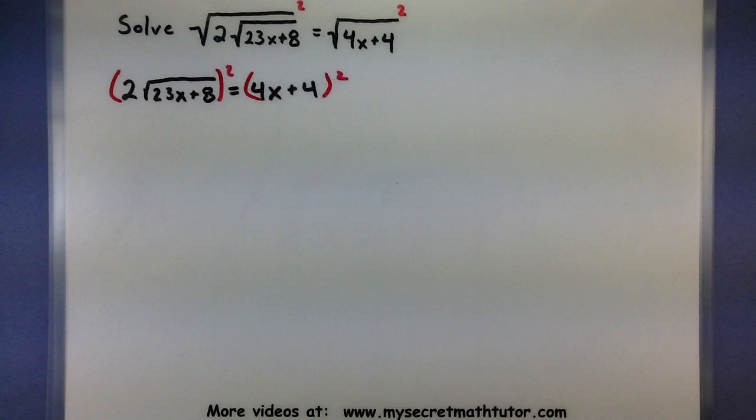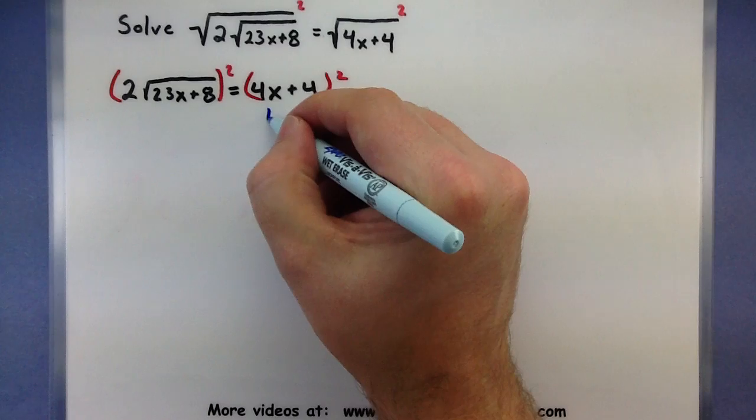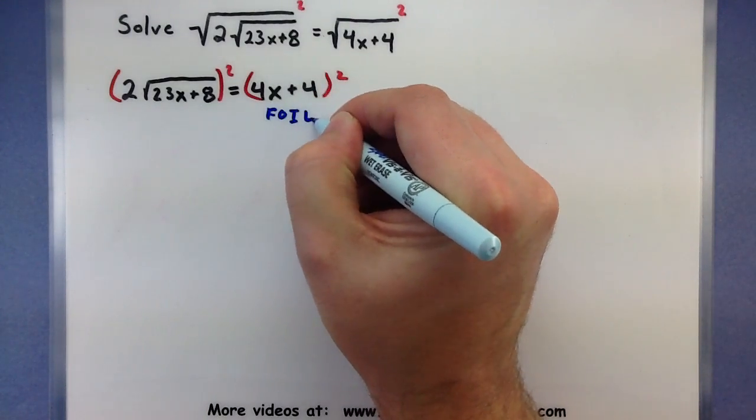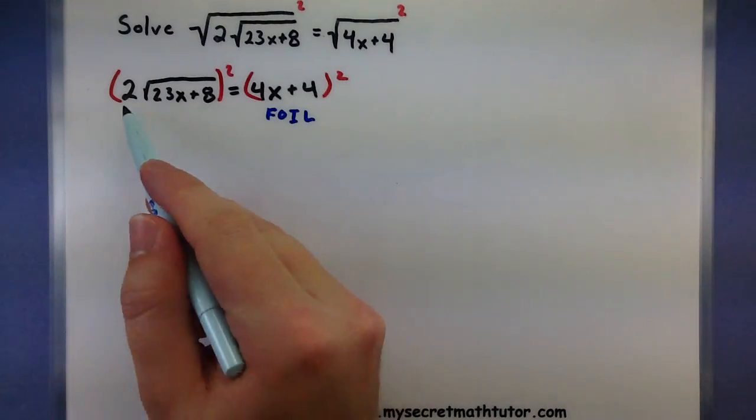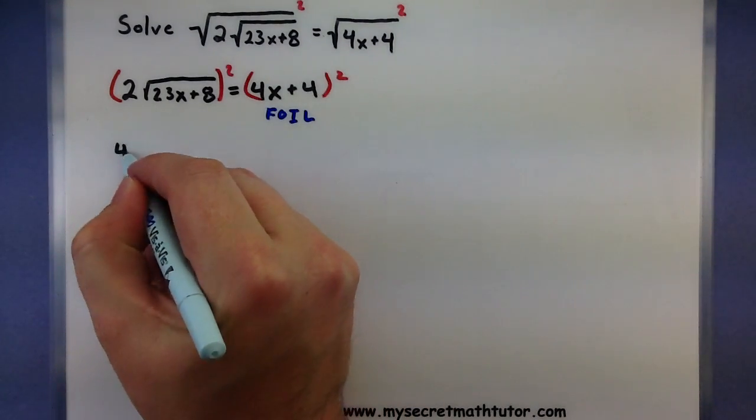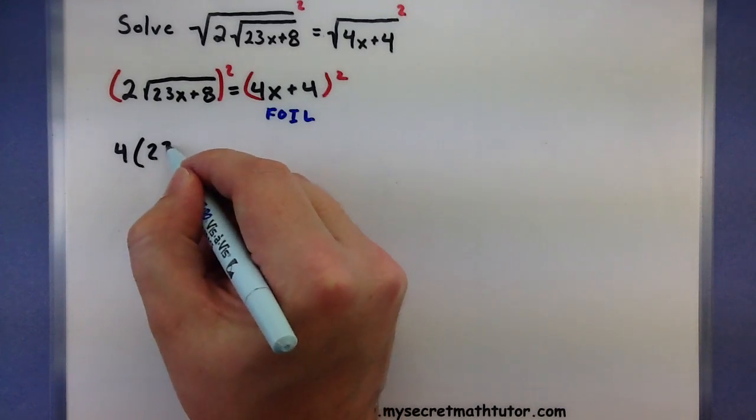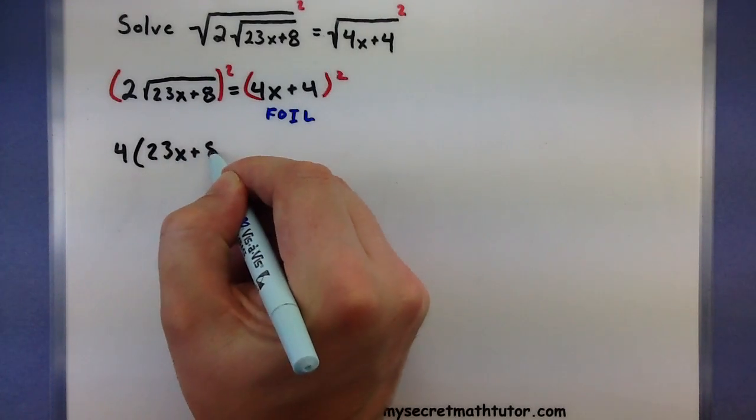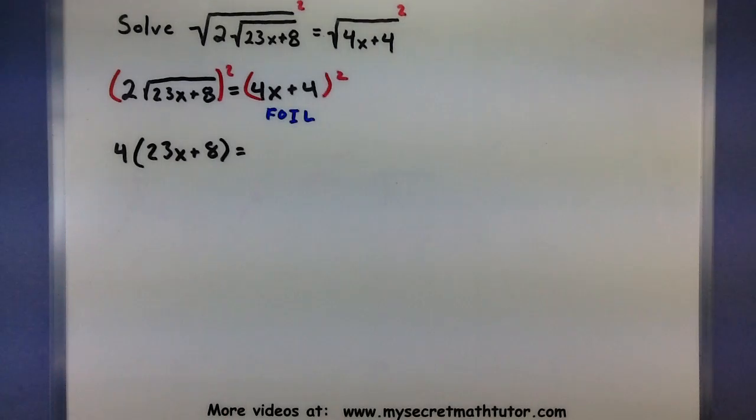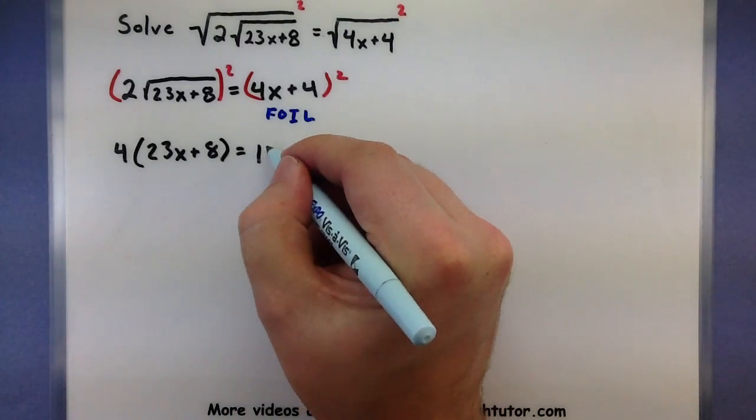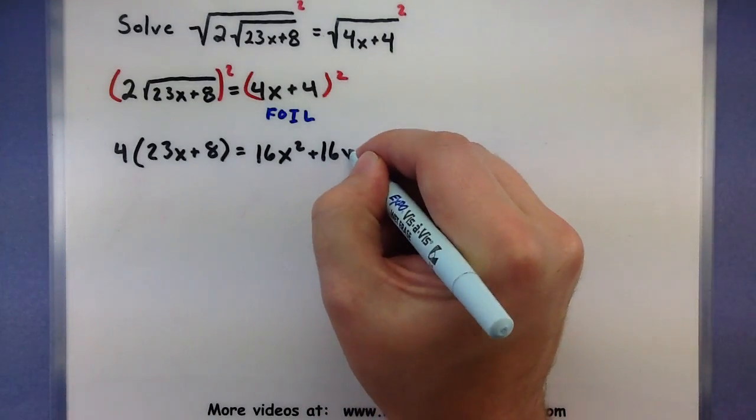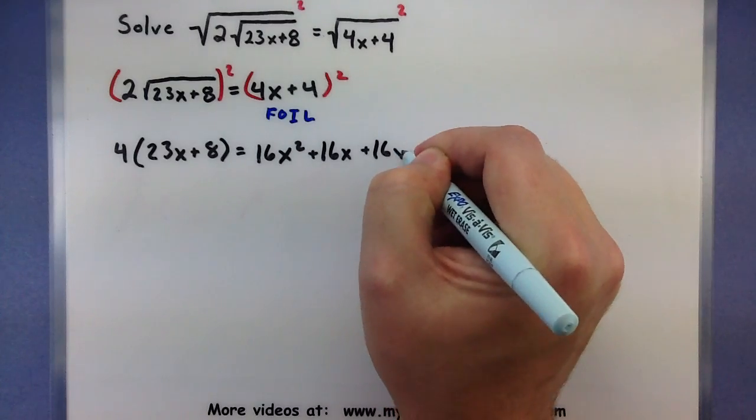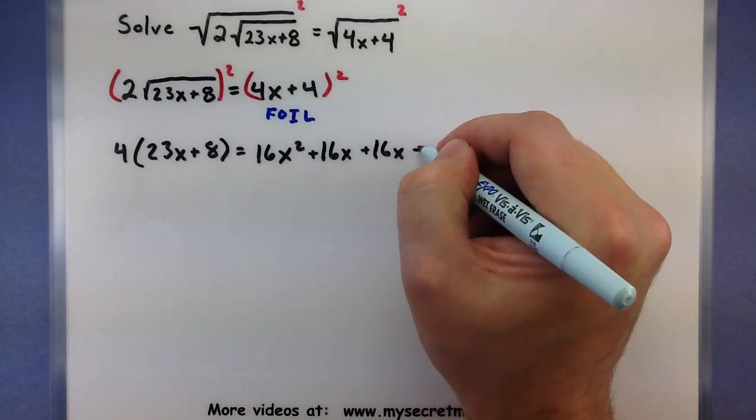Notice on the right side we have two terms, so you want to remember that side we will have to FOIL it. Let's see what we get for this one. So if I square a 2, I get a 4. If I square a square root, all of that will be gone. So 23x plus 8, and over on this side, now it's time to FOIL. So 4x times 4x, 16x squared. Outside term would be a 16x. Inside terms, another 16x. And last terms, plus 16.